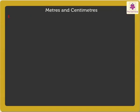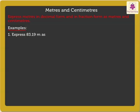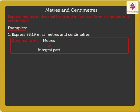Next is to express meters in decimal form and in fraction form as meters and centimeters. Let's look at a few examples. Express 83.19 meters as meters and centimeters. We know that meters form the integral part and centimeters the decimal part. Thus, we get 83 meters and 19 centimeters.